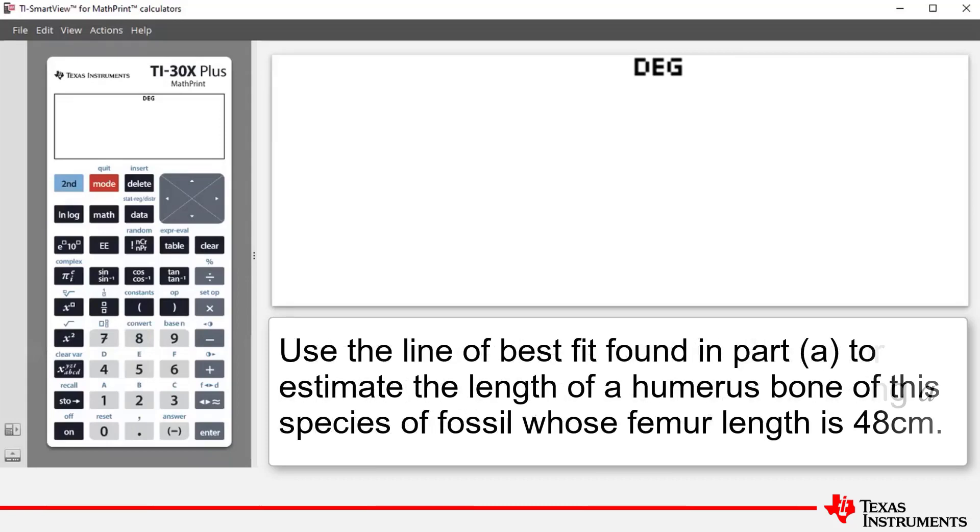And part B asks us to use the line of best fit found in part A to estimate the length of a humerus bone of this species of fossil, whose femur length is 48 centimeters, giving our answer correct to the nearest centimeter.